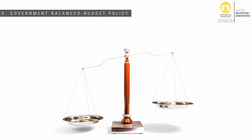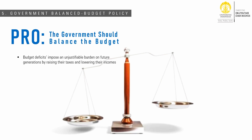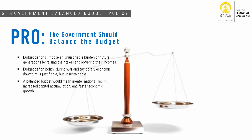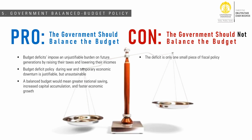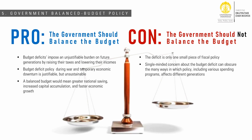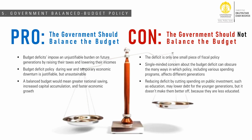The next macroeconomic policy debate is whether a government should balance the budget or not. Advocates argue that budget deficits impose an unjustifiable burden on future generations by raising their taxes and lowering their incomes. Even though budget deficits during war or a temporary economic downturn are justifiable, they are unsustainable. Returning to a balanced budget would mean greater national savings, increased capital accumulation, and faster economic growth. Critics, however, argue that the deficit is only one small piece of fiscal policy, and single-minded concern about it can obscure the many ways policy affects different generations. For example, reducing deficits by cutting spending on education may result in lower debt but leaves younger generations less educated and no better off.